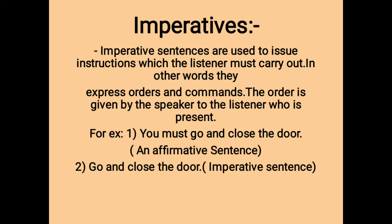The last type of sentence I am going to explain is imperatives. Imperative sentences are used to issue instructions which the listener must carry out. In other words, they express orders and commands. The order is given by the speaker to the listener who is present. The speaker is always the first person singular, 'I,' and the listener is always the second person, 'you.' These sentences contain auxiliaries signifying order, such as 'must' and 'should,' but in imperative sentences, both are dropped because they are clearly understood from context.